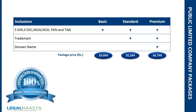You can either file the documents at the MCA office in your respective territory or use Legalrasta services for registering a public limited company. With Legalrasta you can register a public limited company by filling a simple online form available at their website. The package for a public limited company starts at rupees 29,999.